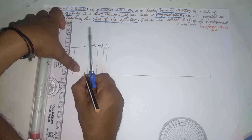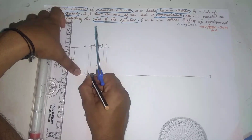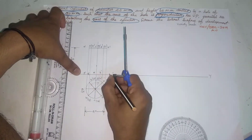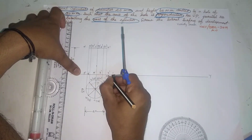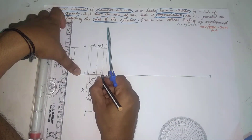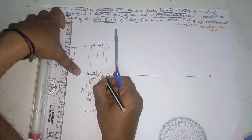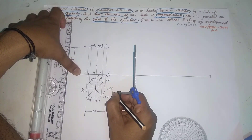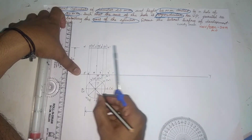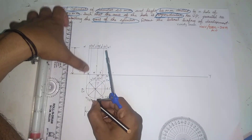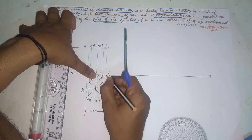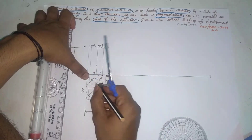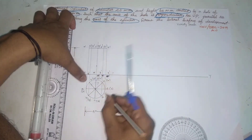So P dash, Q dash, R dash, S dash, T dash, U dash, V dash — and this is PQ, T dash, PQ dash, R, S, T, U dash, V dash. These are the labeled dash points on the cylinder and hole.